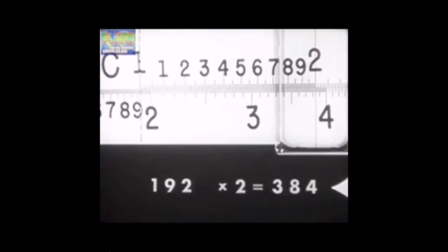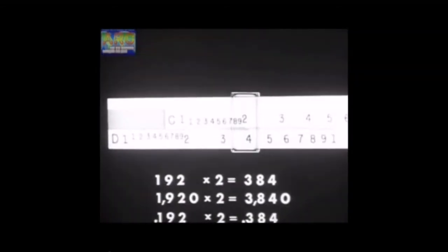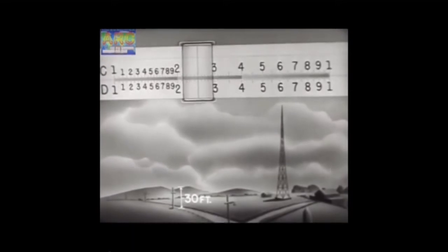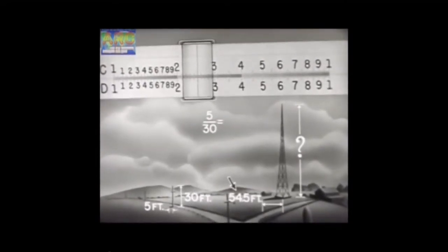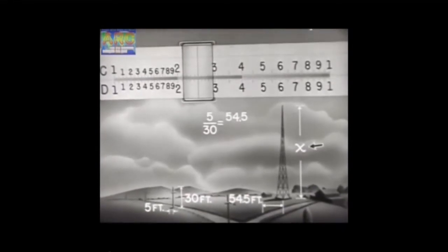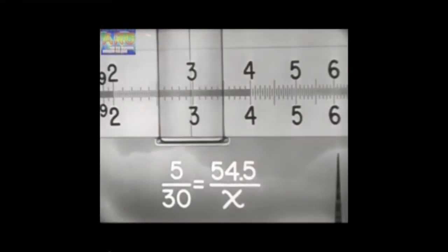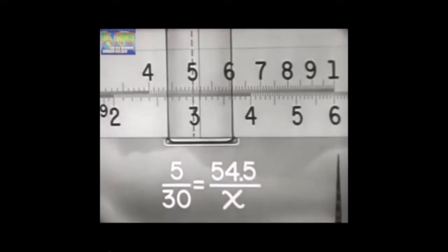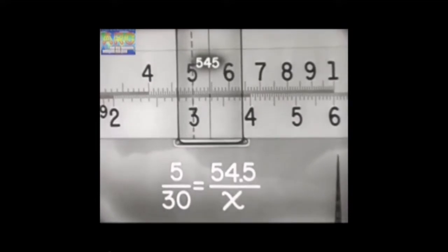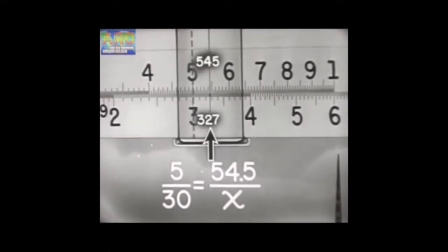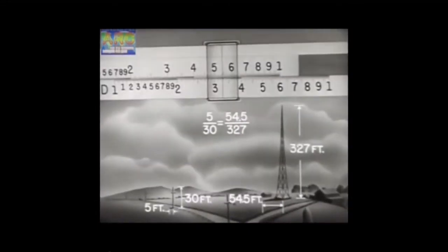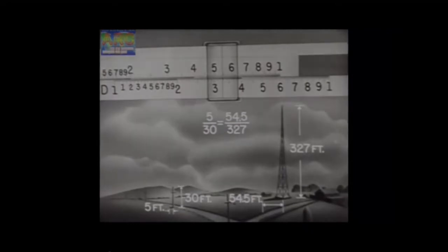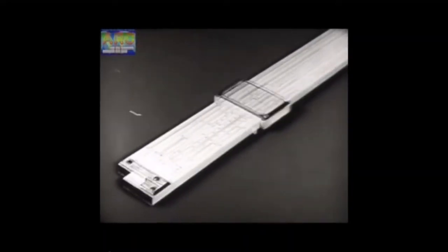Remember, the settings and procedure would be the same if ciphers and decimals were involved. Here is a post 30 feet high, casting a shadow 5 feet long. The tower casts a shadow 54.5 feet long. How high is the tower? The problem may be stated in terms of proportion: 5 is to 30, as 54.5 is to X. To 3 on D, slide 5 on C. Push the hairline to 545 on C. Under the hairline, read the answer, 327, on D. The height of the tower is 327 feet. These are only a few out of the wide variety of problems that can be worked with the standard slide rule.